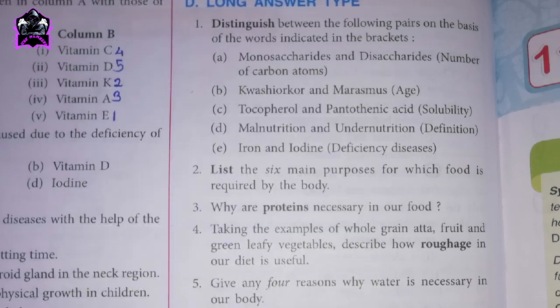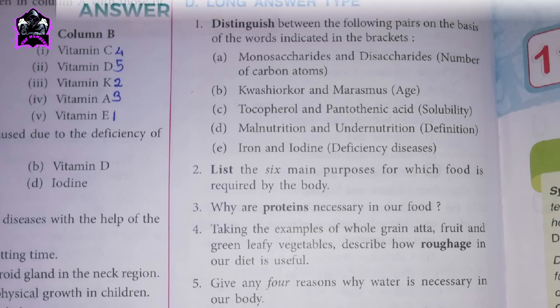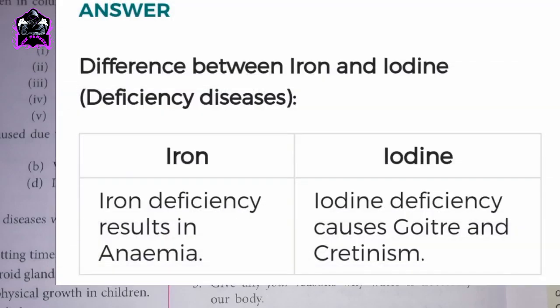E. Distinguish between iron and iodine by deficiency diseases. Iron deficiency results in anaemia. Iodine deficiency causes goitre and cretinism.